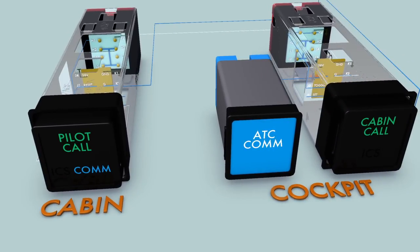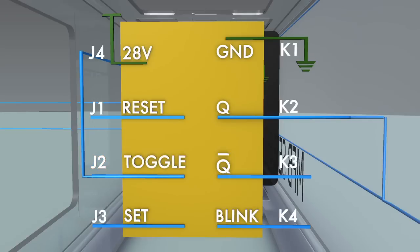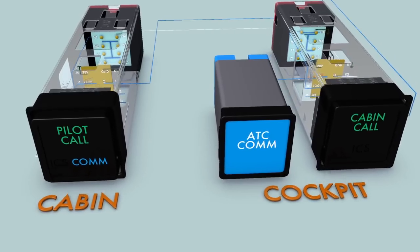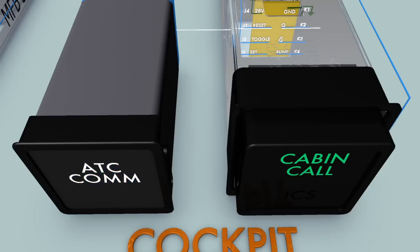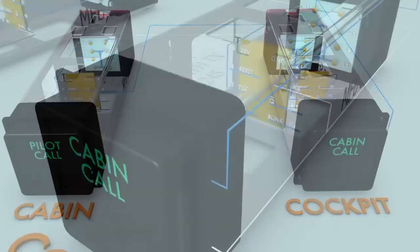As long as the reset input is held low by the ATC COM input, toggle is disabled and any effort to activate the ICS is blocked. Once the ATC link is cancelled, ICS may once again be activated.